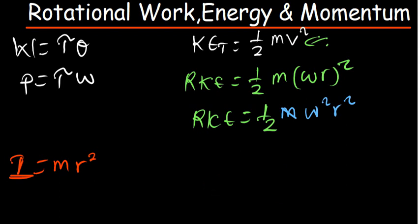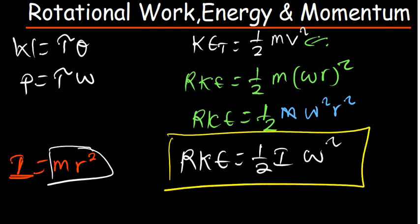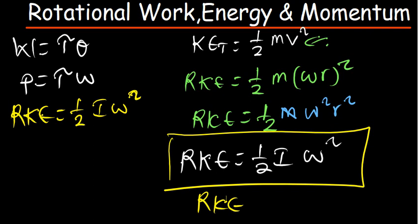From here I can clearly see that rotational kinetic energy will be half times mass times R squared, times omega squared. Mass times R squared is the moment of inertia I. Therefore, rotational kinetic energy equals half times inertia times angular velocity squared. That is the formula for rotational kinetic energy.